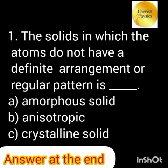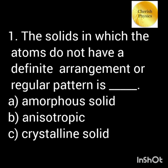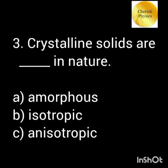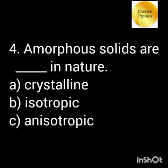The solids in which the atoms do not have a definite arrangement or regular pattern is called amorphous solids. The solids in which the atoms are arranged in a regular or periodic pattern is called crystalline solids. Crystalline solids are anisotropic in nature, while amorphous solids are isotropic in nature.